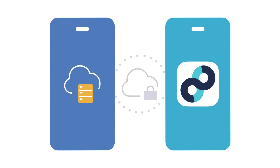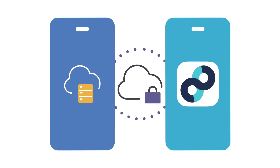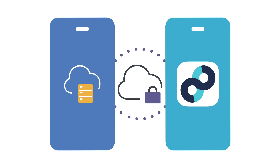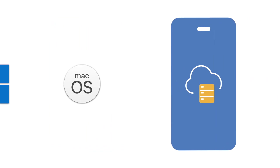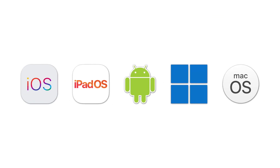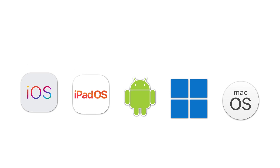Once Jamf Data Capping is configured in Radar, and the Jamf Trust app is installed on user devices, mobile data traffic is vectored securely through the Jamf Security Cloud. The Jamf Security Cloud can then push information to your organization's Radar tenant for reporting and mobile data control. Jamf Data Capping supports iOS, iPadOS, Android, Windows, and macOS devices, ensuring every device in your fleet is protected from unexpected data overage and roaming fees.